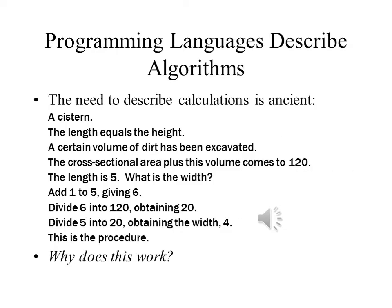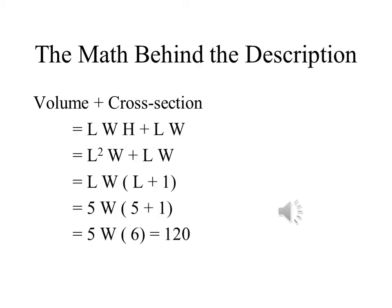We have to understand that the need to describe calculations is ancient. This page shows an algorithm that is a description of how to calculate the width, which appeared in cuneiform writing as adapted by Donald Knuth. We have the volume and the cross-section, but we can work backwards to find the width. But why does this work?